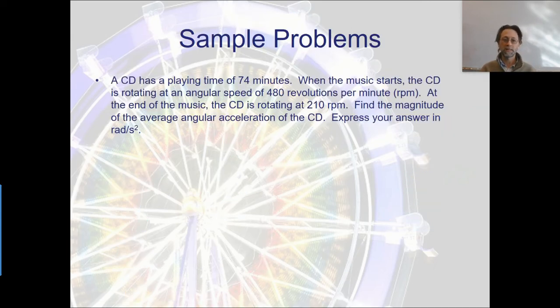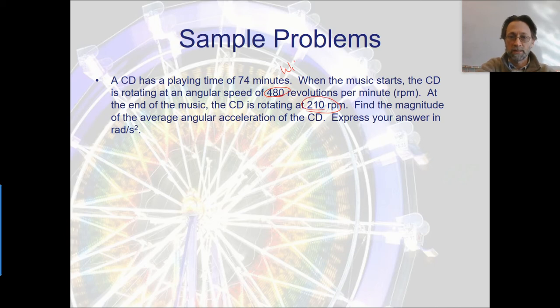Sample problem. A CD has a playing time of 74 minutes. When the music starts, the CD is rotating at an angular speed of 480 revolutions per minute or RPM. So I'm mentally already thinking, I'm going to have to convert that into radians per second. I can't leave that in RPMs. At the end of the music, the CD is rotating at 210 RPMs. And also now I'm noticing that those are going to be my two velocities, right? Revolutions per minute is the same as radians per second, which is an omega value. So my 480 is going to be my omega initial. My 210 is going to be my omega final. And I'm going to have 74 minutes, which is going to be some kind of time that I'll have to convert into seconds.